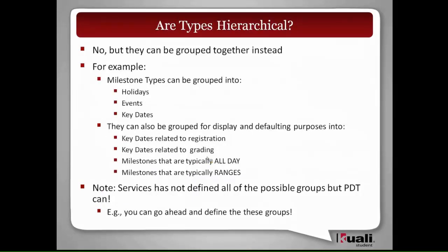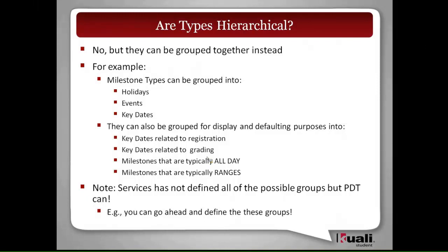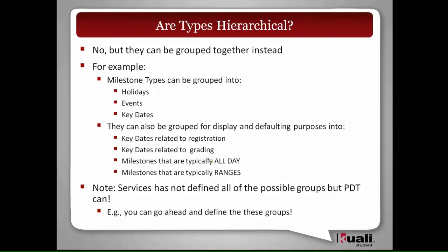If you're a Java programmer, you might think types should be hierarchical — but they're not. The previous services team decided not to do that. Instead, they allowed types to be grouped in different ways, so you get some of the same effect of categorizing things for different purposes. For example, you can put a bunch of different milestone types into categories — holidays, events, key dates, and so on — and they can be regrouped for different display and defaulting purposes. We've set up a generic structure to allow you to define different groups for whatever the application wants to do.